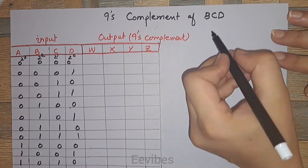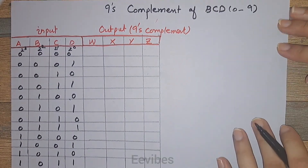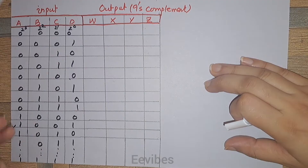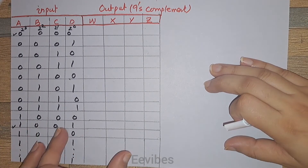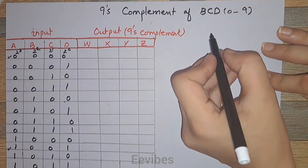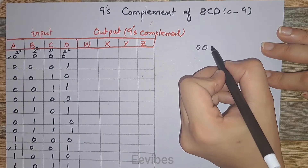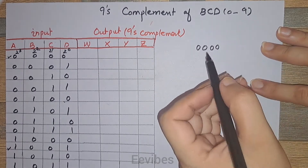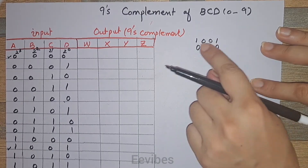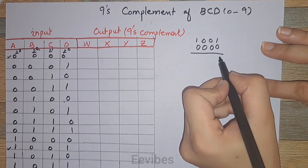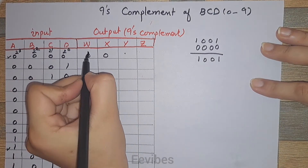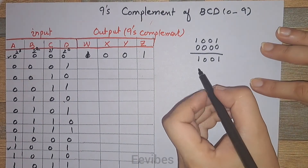We know that the range of any BCD number is from 0 to 9, so we will only consider BCD combinations from 0 to 9. For the rest of the combinations we treat them as don't care conditions. We have to design a combinational circuit that takes the 9's complement of the BCD number. The first BCD number is 0000, and to take the 9's complement we subtract each number from 9. So the binary combination of 9 minus 0 gives 1001, making the output combination 1001.